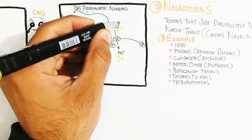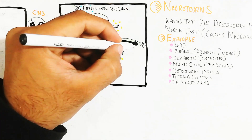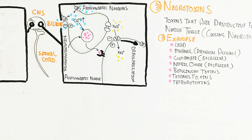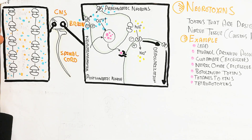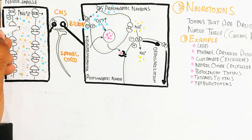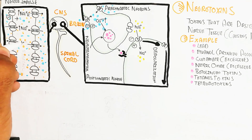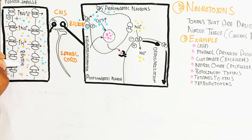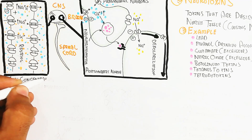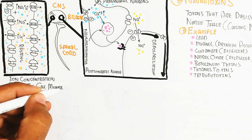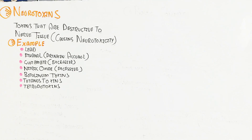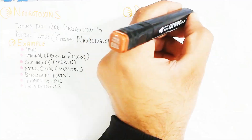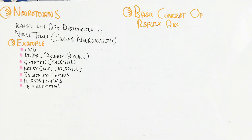Sodium moves inside while potassium moves outside, leading to depolarization of the neuron — the inside becomes positive and the outside negative — which transmits the signal to another neuron via the synapse. When sodium increases inside along with chloride, the intracellular cation potassium moves outside. Three sodium ions move inside and two potassium ions move outside, leading to depolarization versus the resting state.